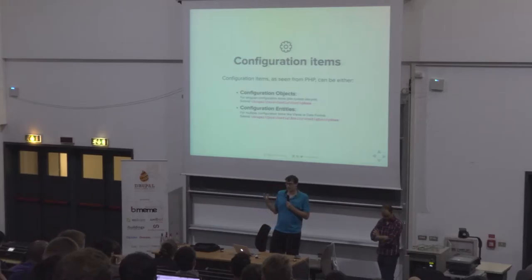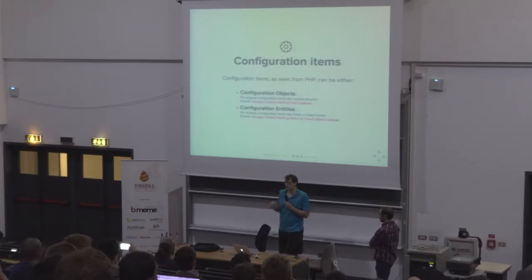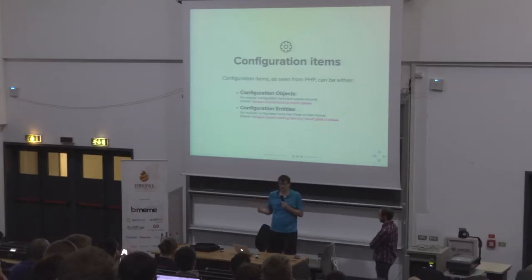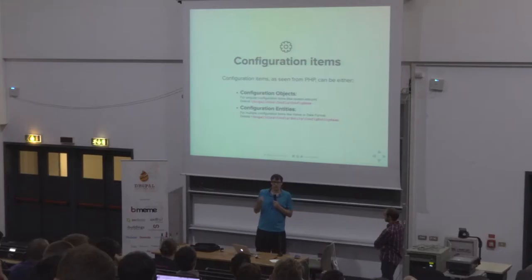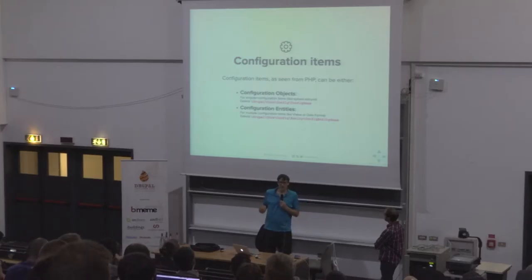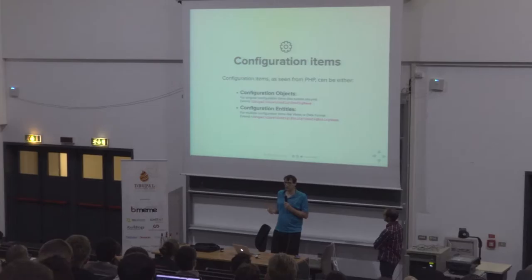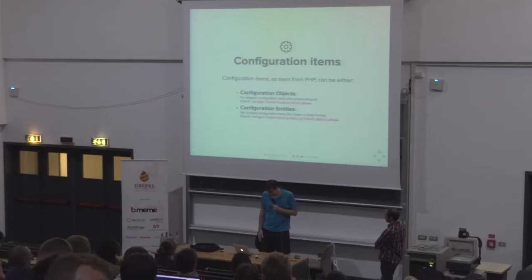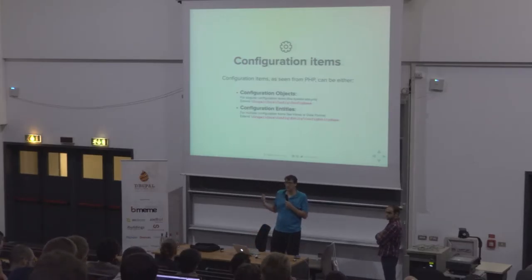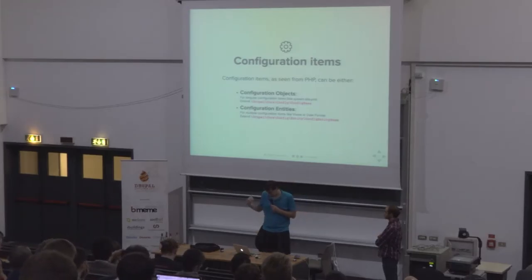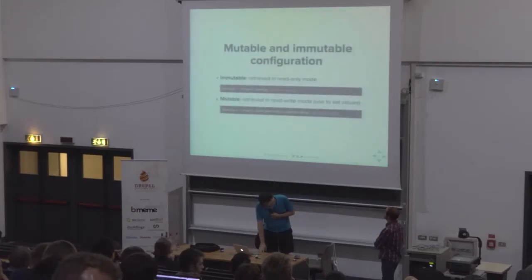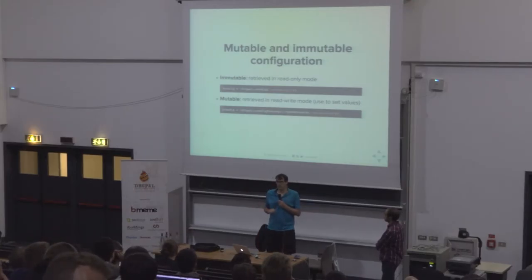Configuration comes with an API. There are two different types: configuration objects and configuration entities. Configuration objects are for things that there's only one of — for example the site name or site settings, you can only have one site name. Configuration entities are like content entities where you can have multiple instances — more than one view, more than one content type, more than one taxonomy vocabulary. They both extend their own base classes, so if you want to create your own, you just extend those.